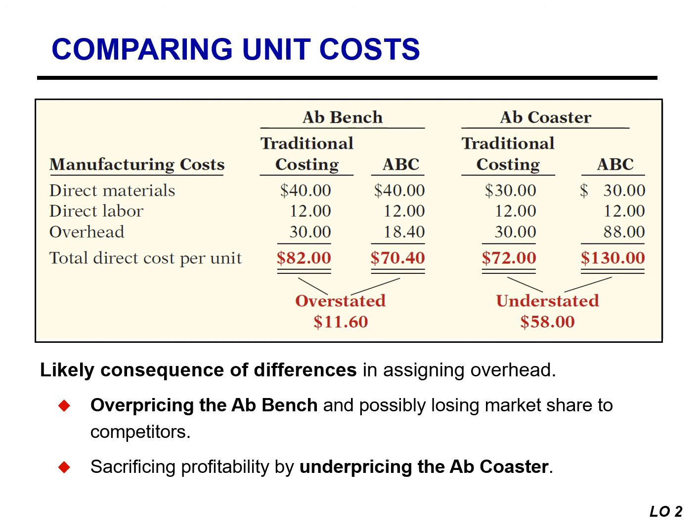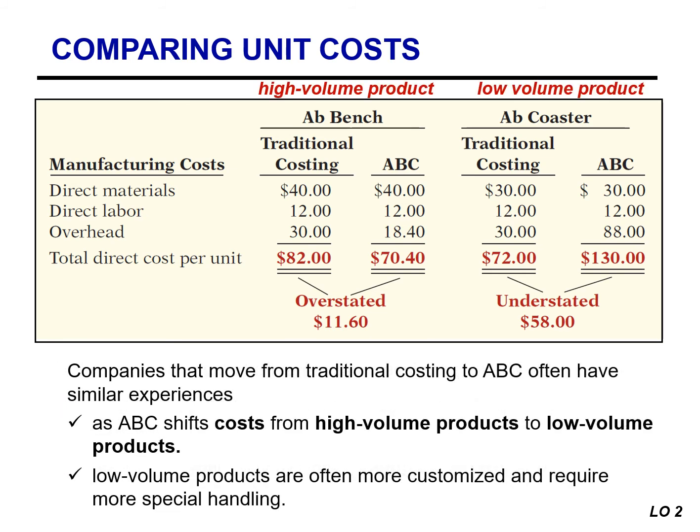ABC helps Atlas avoid negative consequences of a traditional costing system, such as overpricing its ABB Benches and most likely losing market share to competitors. Atlas has also been sacrificing profitability by underpricing the ABB Coaster. Activity-based costing does not change the amount of overhead cost — under both traditional costing and ABC, Atlas spends the same $900,000 in overhead; it's just how that overhead gets allocated to the products that is very different. Companies that move from traditional costing to ABC often shift costs from high-volume products to low-volume products, because low-volume products are often more customized and require more special handling.